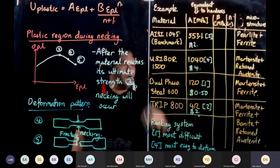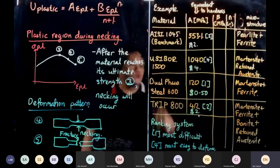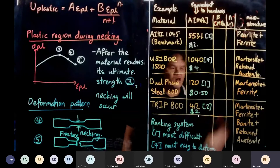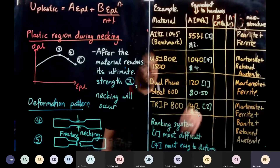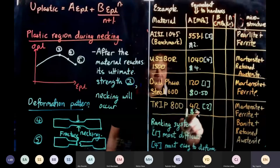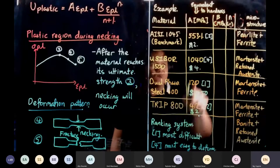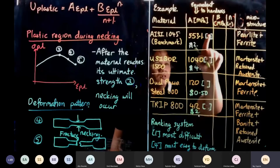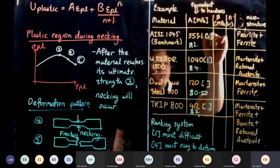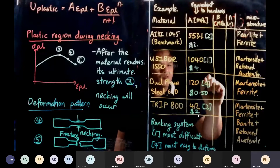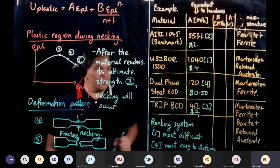Retained austenite is easy to deform; martensite is very hard to deform. Ferrite is soft but it's BCC. Based on microstructure, number one is most difficult to deform. I apologize — once is most difficult, two is next, and four is most easy to deform.